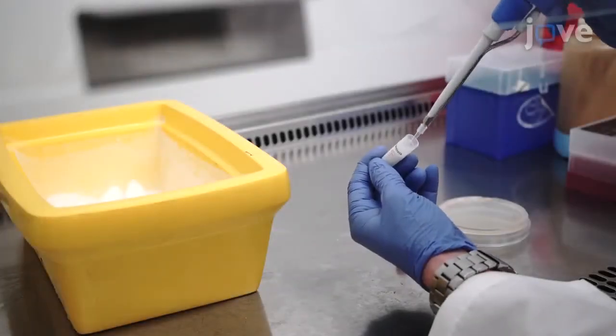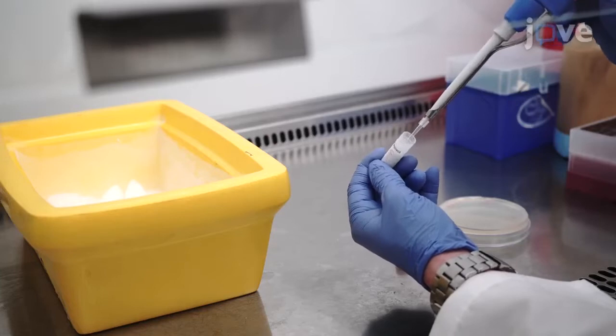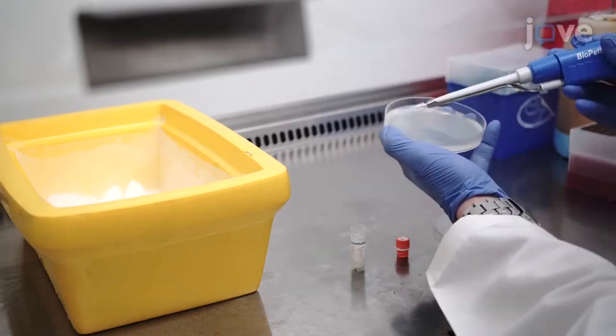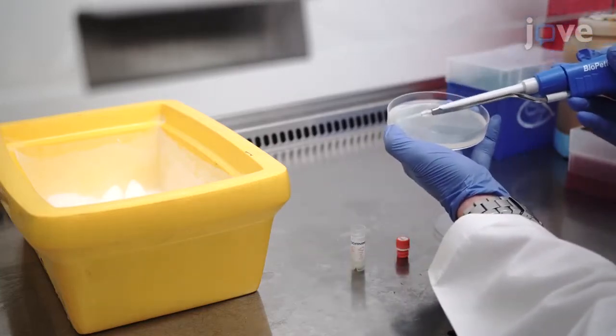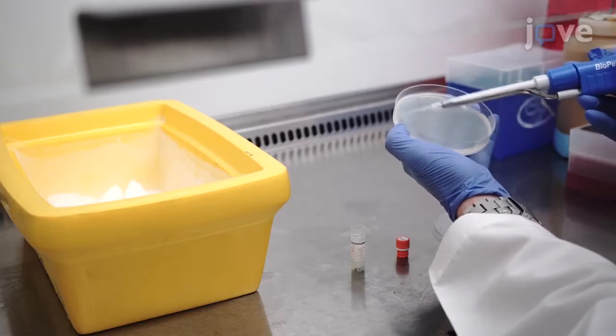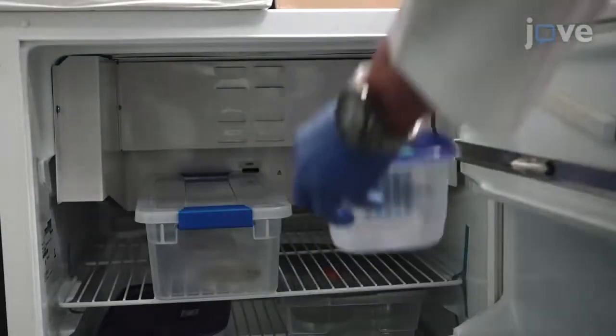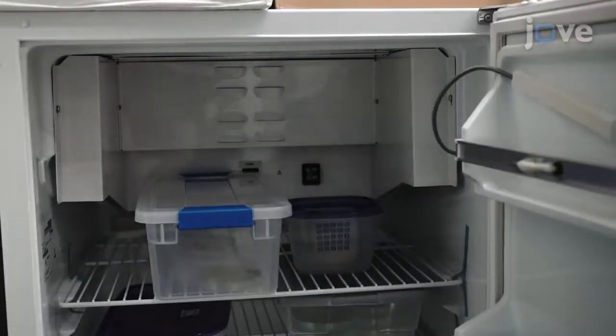To begin, while working inside a BSL-2 biosafety cabinet, streak P. aeruginosa from a frozen stock onto an LB agar plate. Incubate the plate at 37 degrees Celsius for 16 to 24 hours.